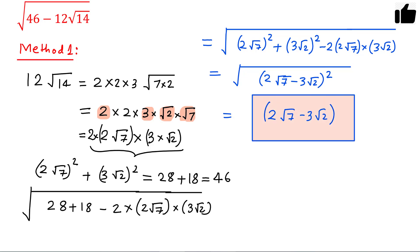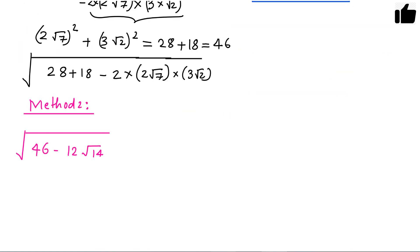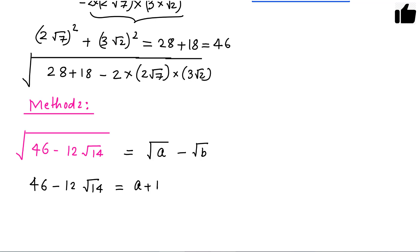Now I will discuss Method 2. In this method, we write the original expression as equal to root a minus root b, and then square both sides. Squaring gives us 46 minus 12 root 14 on the left, and a plus b minus 2 times root a times root b on the right.